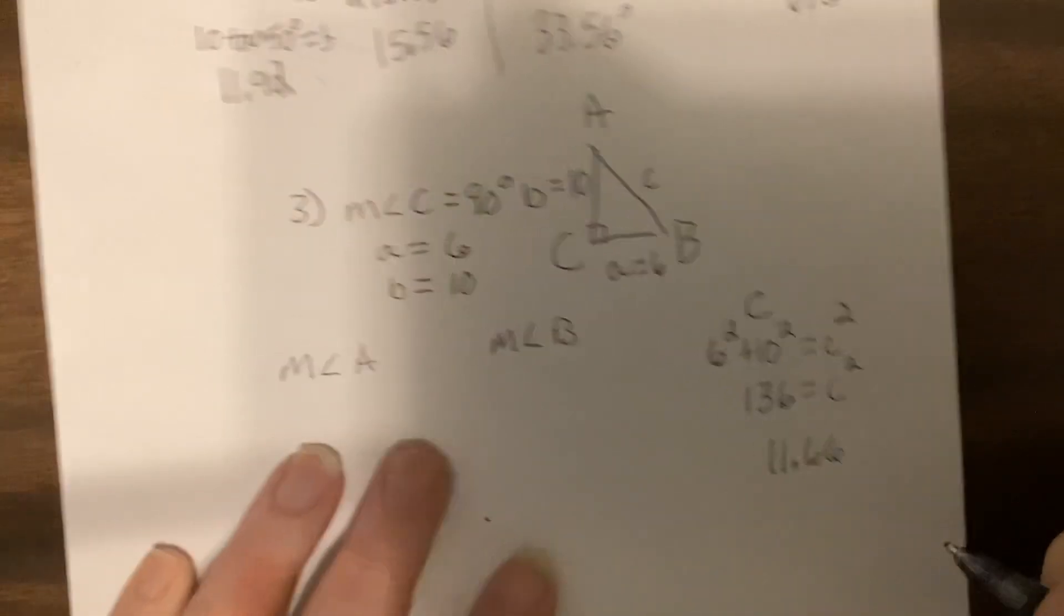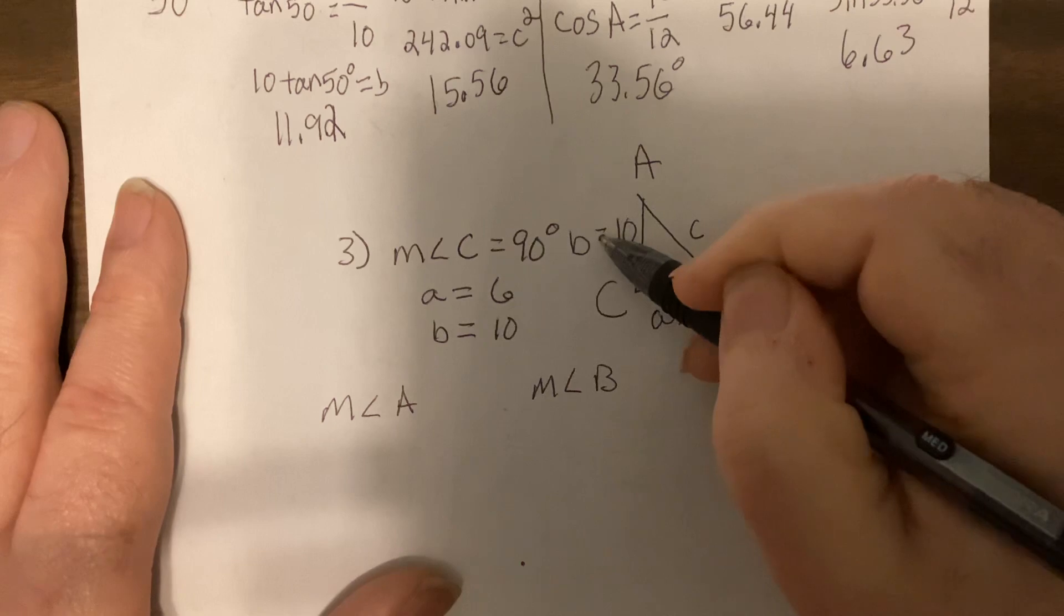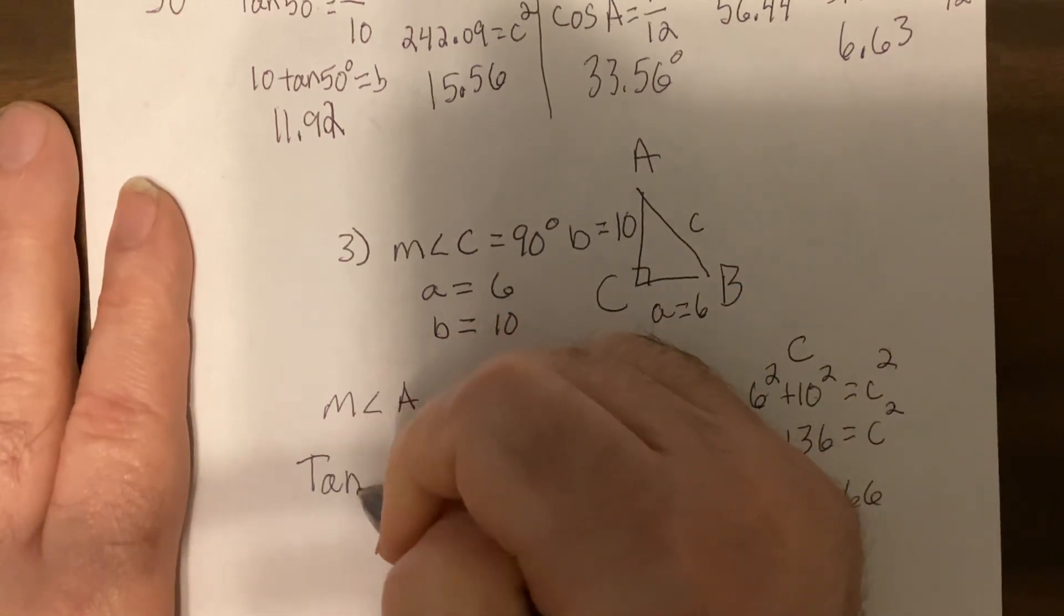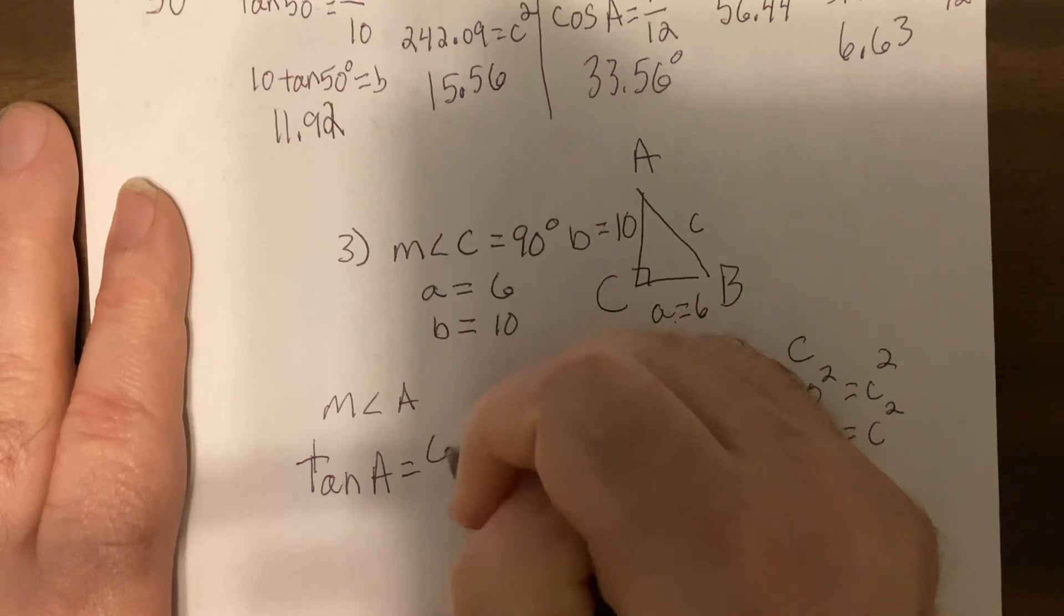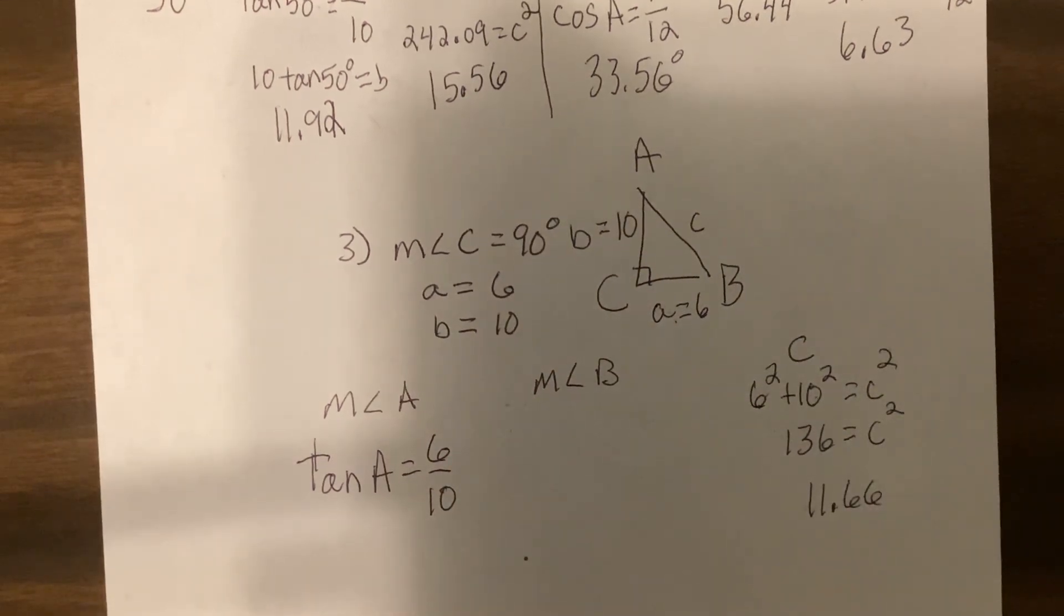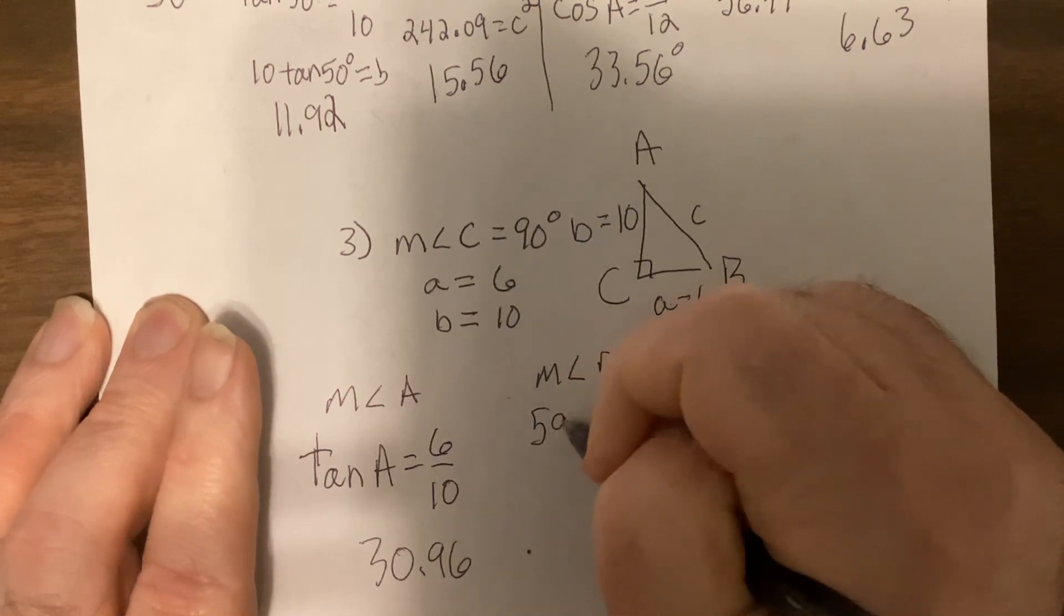Now I always like to round to the hundredth. I'm going to do tangent because we have opposite and adjacent. So tangent of A is opposite over adjacent. So shift tan, 6 divided by 10, could have done 0.6 I guess if I was awake. So I get 30.96, so this would be 59.04. I hope that's what you got.